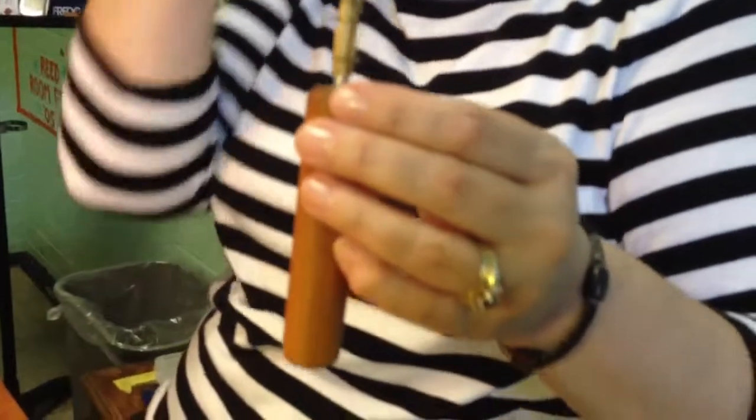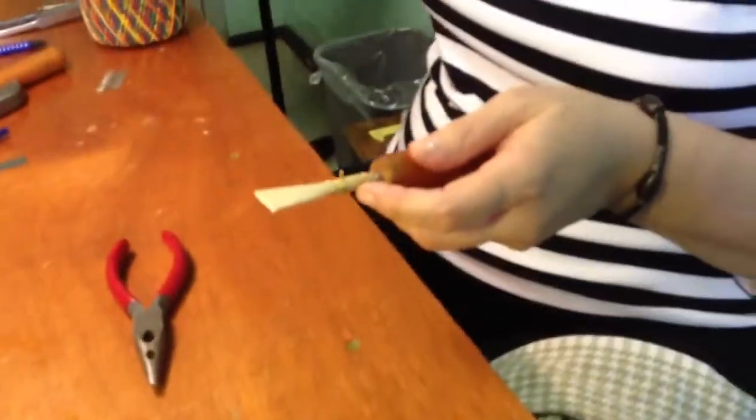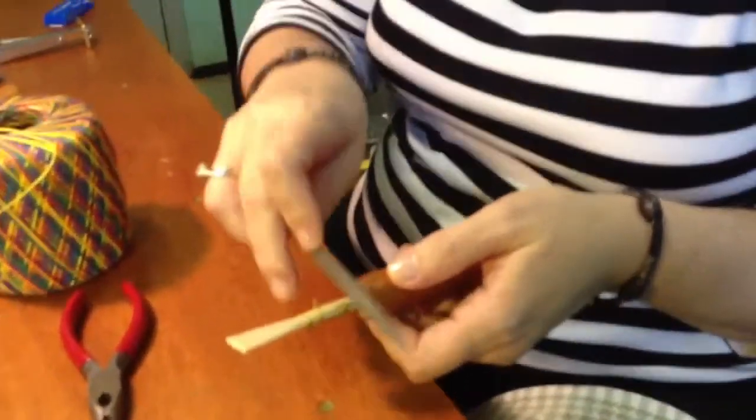So here, there is the naked reed with the wires underneath. Now we take the file, and we score so that the thread has something to hold on to.